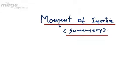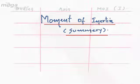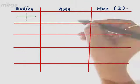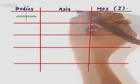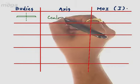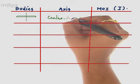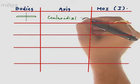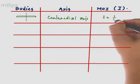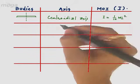Today we are going to summarize the concept of moment of inertia for different bodies. Starting with the moment of inertia of a rod along the axis perpendicular to the center and passing through it, that is called the central or centroidal axis. The moment of inertia comes out to be equal to 1/12 mL square.